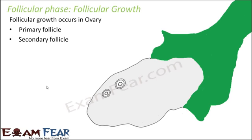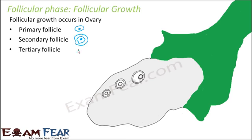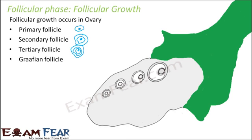The primary follicle forms the secondary follicle: inside is the primary oocyte, which gets surrounded by layers of cells. Secondary follicle means more layers; tertiary follicle means even more layers. The tertiary follicle then matures to form the Graafian follicle. Inside the primary, secondary, and tertiary follicle is the primary oocyte, but by the time the Graafian follicle forms, the primary oocyte undergoes meiosis to form the secondary oocyte, which then also undergoes meiosis to form the ovum — the egg. This ovum is released when the Graafian follicle ruptures.